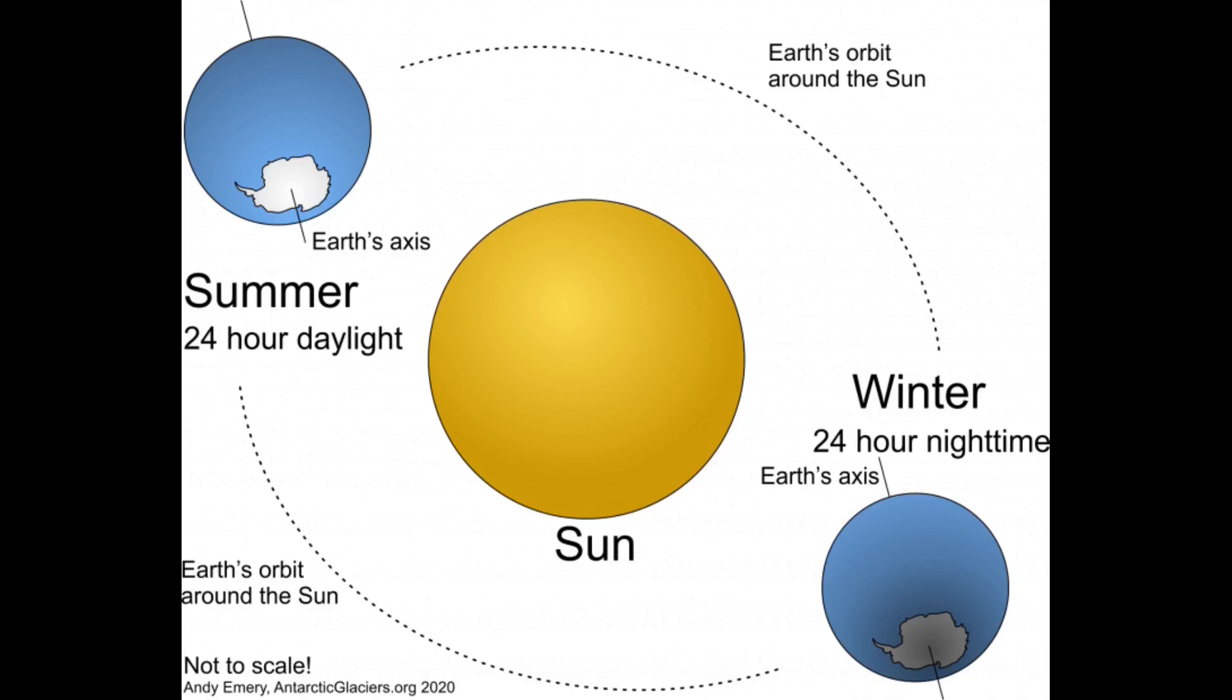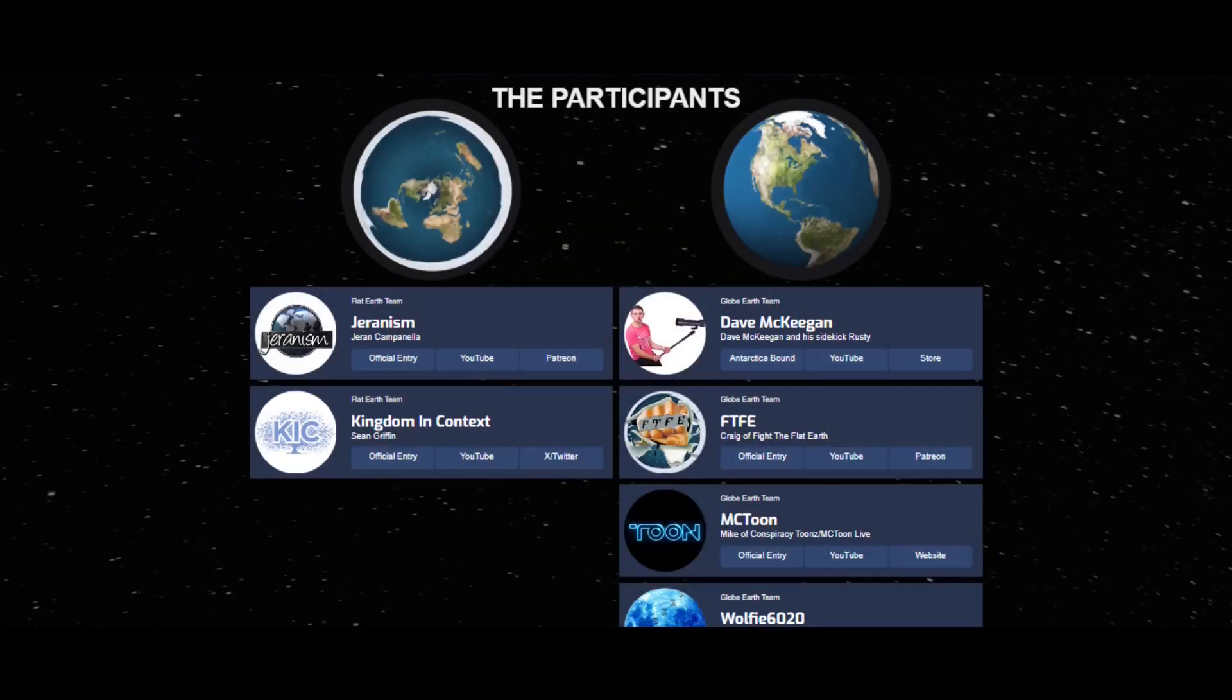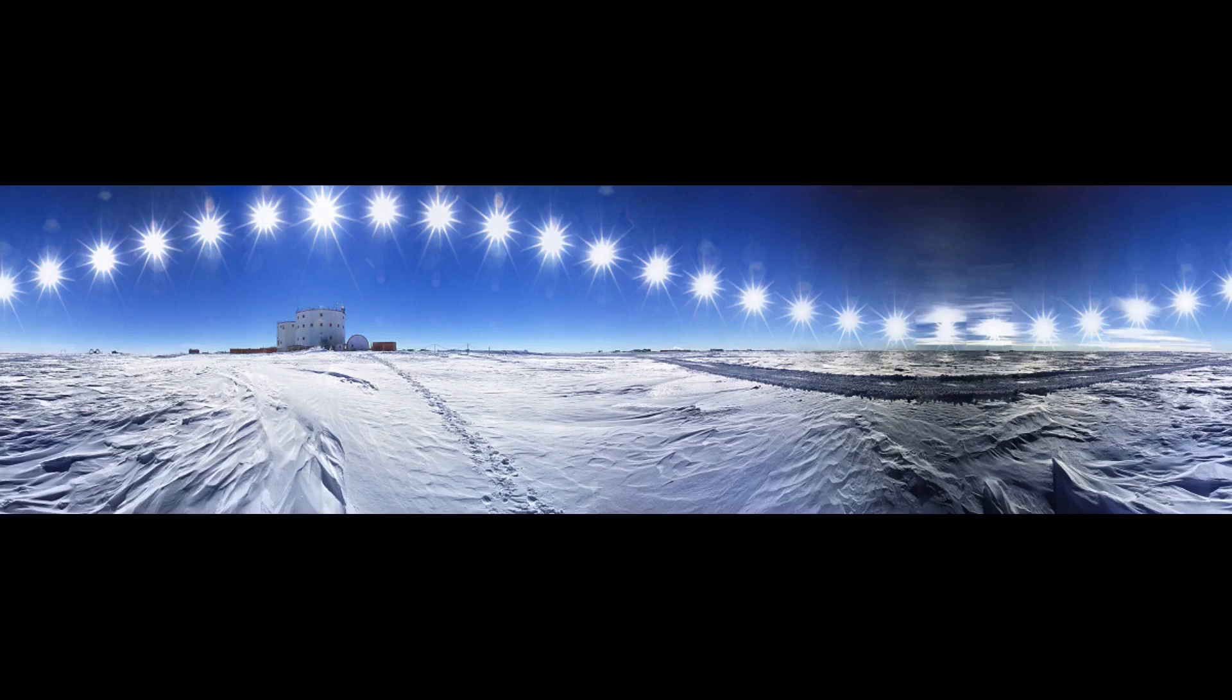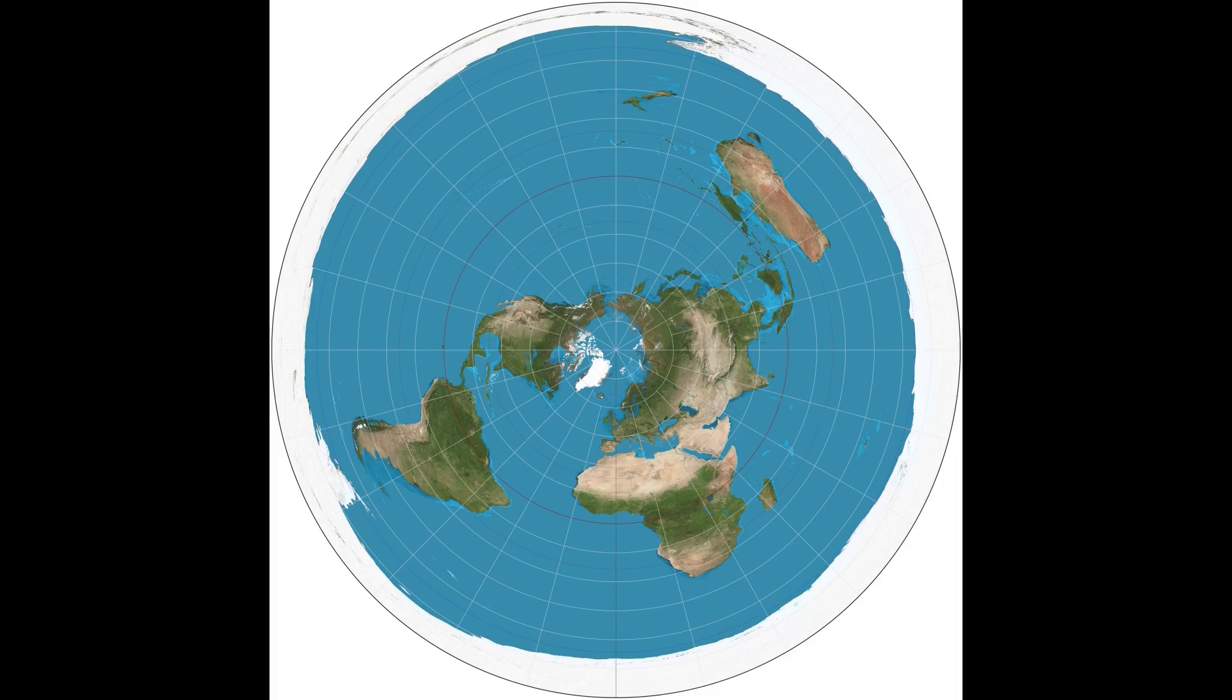Now the globe Earth believers organizing this so-called final experiment believe that seeing a 24-hour sun will disprove the flat Earth, because they're referring to the flat Earth as this azimuthal equidistant map of the continents that's centered on the North Pole and makes Antarctica appear like a ring around this circular map. So of course, if you see a 24-hour sun going around you in Antarctica, that would be impossible if you're using the azimuthal equidistant map as your flat Earth model.